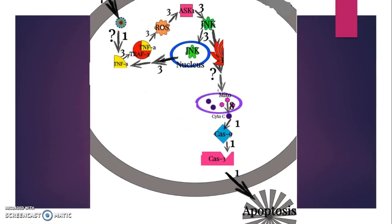In the second pathway, TNF-α binds to TNF receptor-associated factor 2. This complex activates apoptosis signal regulating kinase 1, or ASK1, as long as a reactive oxygen species is present. Activated ASK1 activates Jun-N terminal kinase, or JNK.